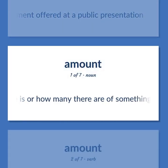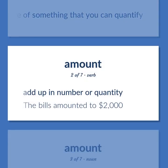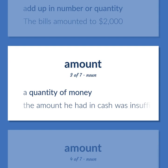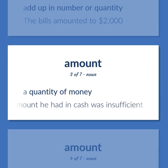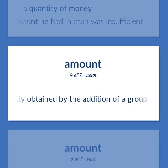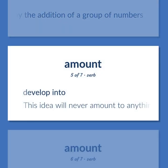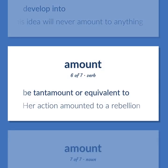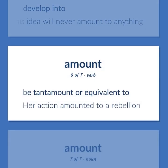Amount: How much there is or how many there are of something that you can quantify. Add up in number or quantity. The bills amounted to $2,000. A quantity of money; the amount he had in cash was insufficient. A quantity obtained by the addition of a group of numbers. Develop into; this idea will never amount to anything. Be tantamount or equivalent to; her action amounted to a rebellion.